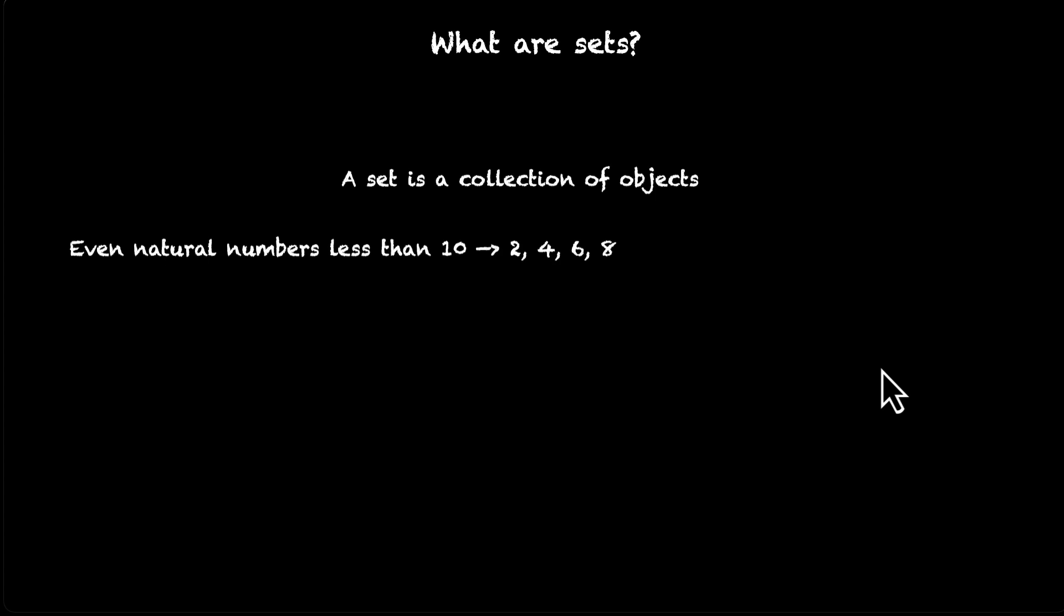Let's look at even natural numbers less than 10. Well, if they are even, they have to be 2, 4, 6, 8, and they can't be more than 8 because we are looking at numbers which are less than 10. So we have 2, 4, 6, 8. It's a good collection of objects. Another one: vowels in the English alphabet. Well, there are 5 vowels: A, E, I, O, U.